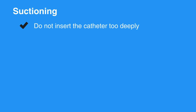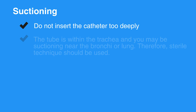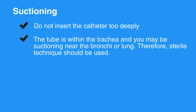Here are some tips on suctioning. When suctioning the oropharynx, do not insert the catheter too deeply. Extend the catheter to the maximum safe depth and suction as you withdraw. When suctioning an ET tube, remember the tube is within the trachea, and you may be suctioning near the bronchi or lung.